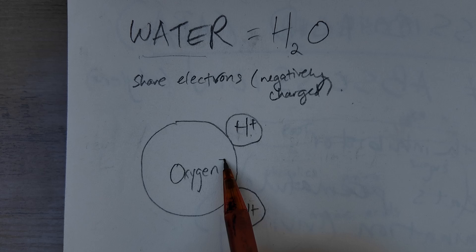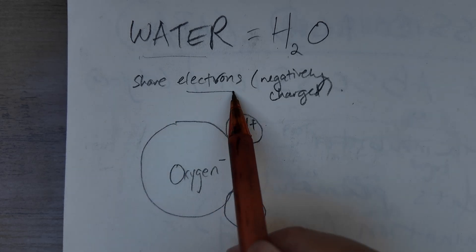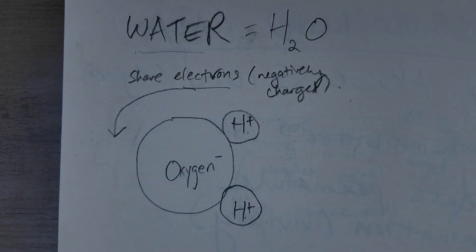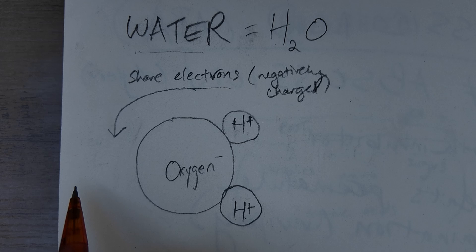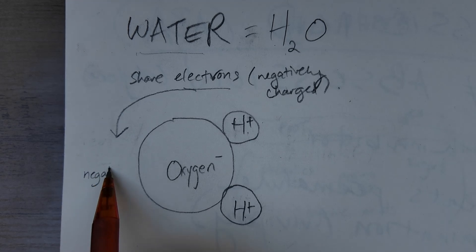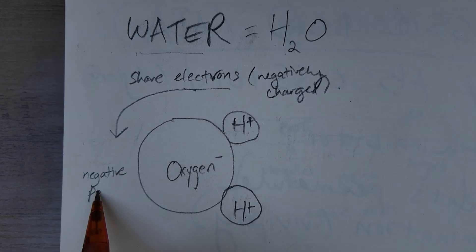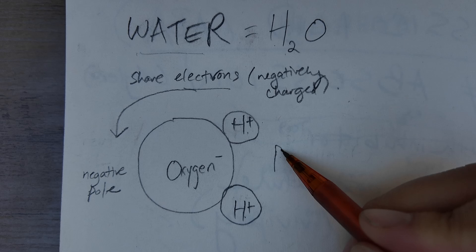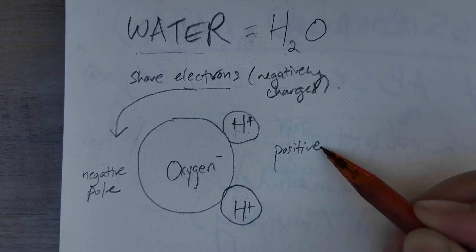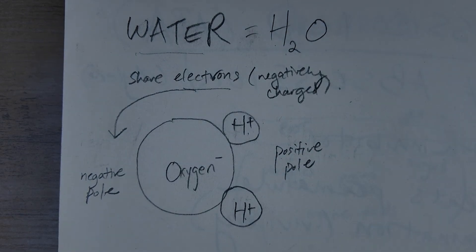But even though there's two of them, the oxygen is still technically stronger. And so these electrons tend to hang out more on the oxygen side. Because the electrons, the negatively charged particles, are more on the oxygen side, that side tends to be negative and the hydrogen side tends to be positive.